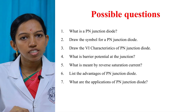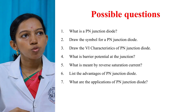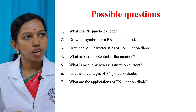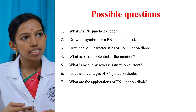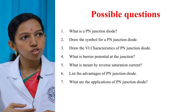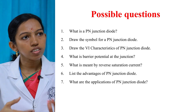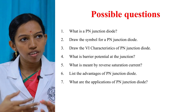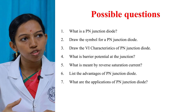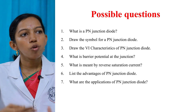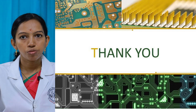Some possible questions covered under this topic: What is the P-N junction diode? Draw the symbol for a P-N junction diode. Draw the V-I characteristics of a P-N junction diode. What is the barrier potential at the junction? What is meant by reverse saturation current? List the advantages of a P-N junction diode. What are the applications of a P-N junction diode? Thank you.